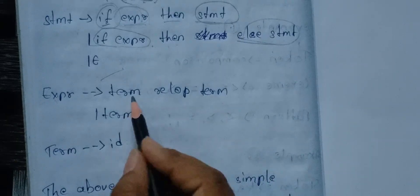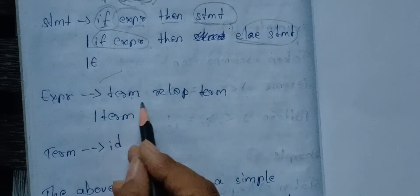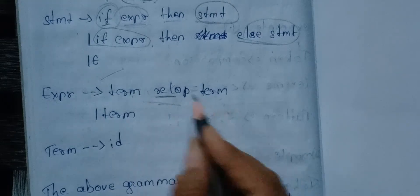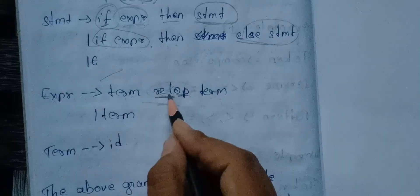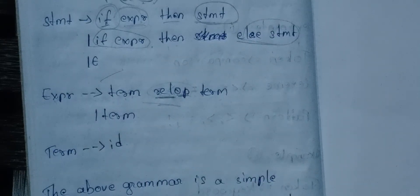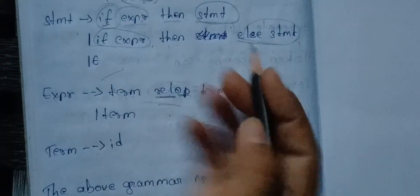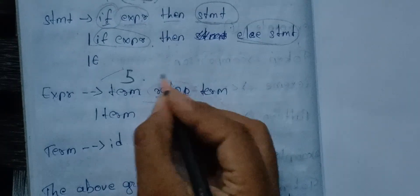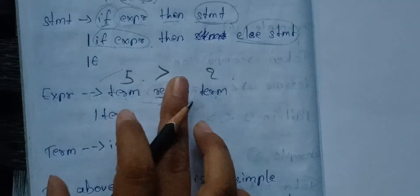An expression has to choose term, relop, term. This relop is a relational operator. REL is relational, OP is operator. The relational operators are greater than, less than, equal to, not equal to. For example, term is 5, operator is greater than, term 2 is 2 — so 5 greater than 2 is true.